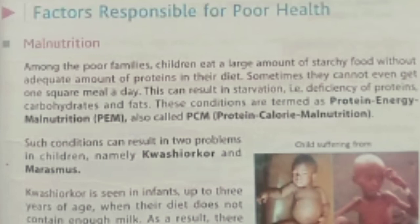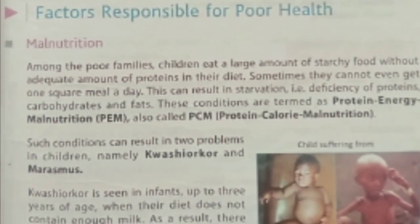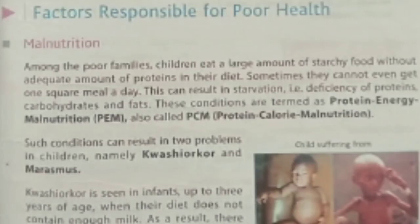Especially children from poor families do not get enough food in their diet, and due to lack of food they suffer from many diseases. The first is deficiency of protein, carbohydrates, and fat. People who are poor do not get proper food, so their body becomes deficient in carbohydrates, proteins, and fats. These conditions are known as PEM and PCM. PEM means protein energy malnutrition, and PCM means protein calorie malnutrition.